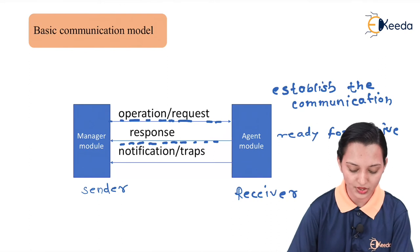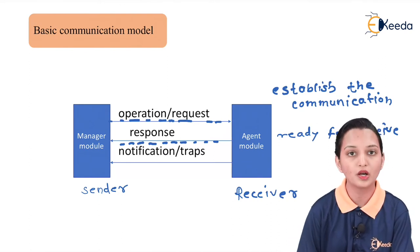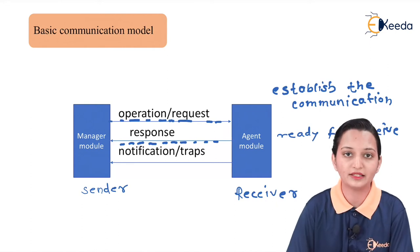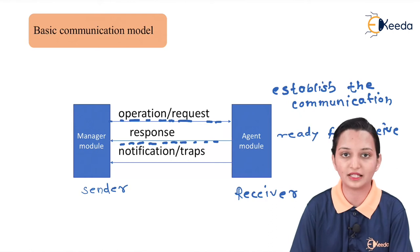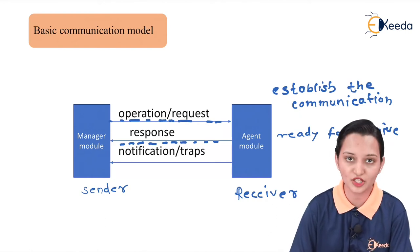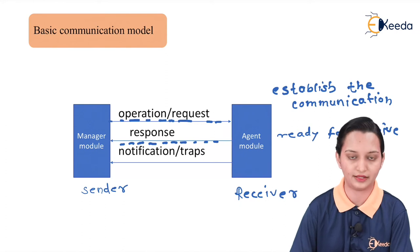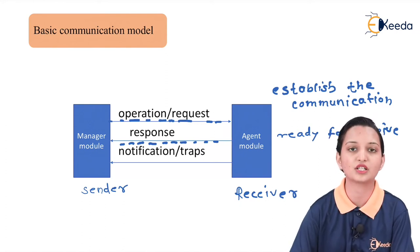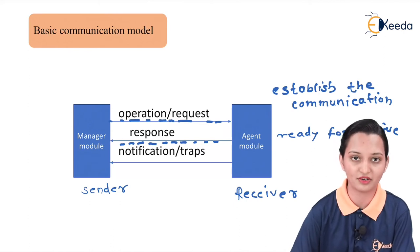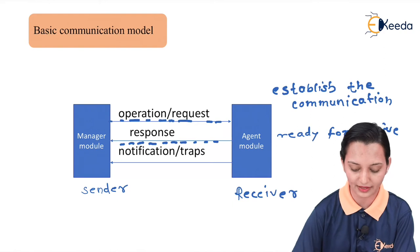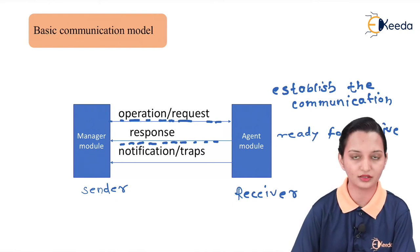To begin the process, the manager has data to send to the receiver. The receiver identifies the sender and determines whether the data is useful, then sends a response along with notifications or traps. In the second scenario, if the agent is the sender and the manager or resources are the receiver, we simply swap the positions of sender and receiver. This is the simple idea behind the basic communication model.